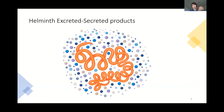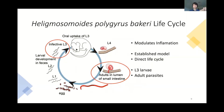The first thing to understand is how we obtain these products. We look into the life cycle of the parasite. The one I work with is called Heligmosomoides polygyrus. This parasite is already known to modulate inflammation — we know it lowers inflammation in other models of disease. It is a very well-established parasitic model with a very direct life cycle.